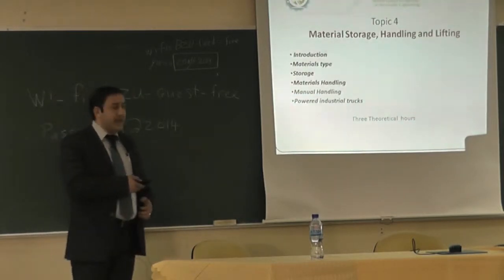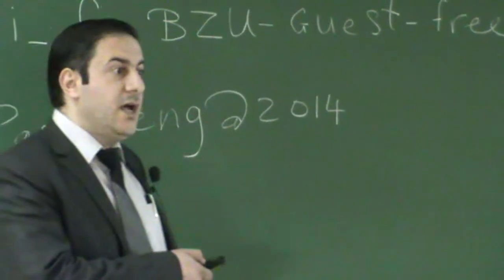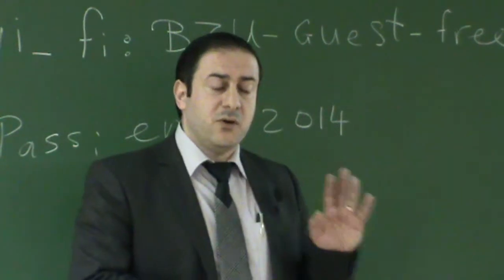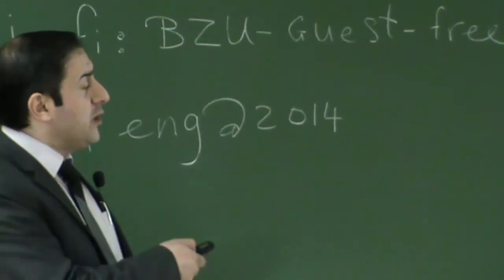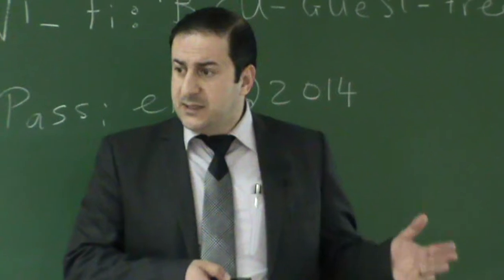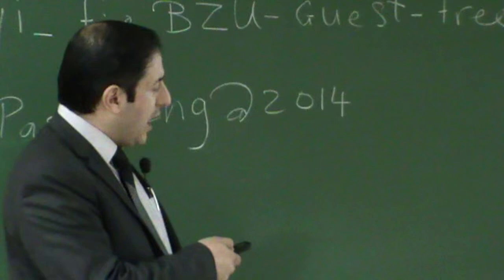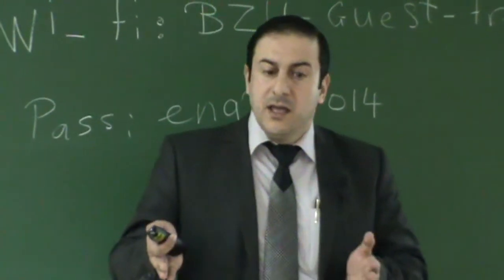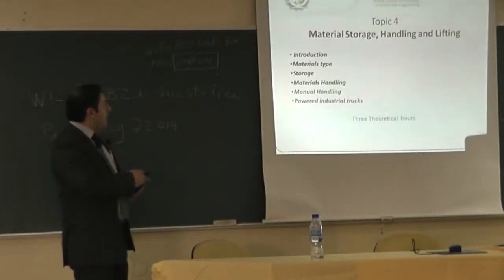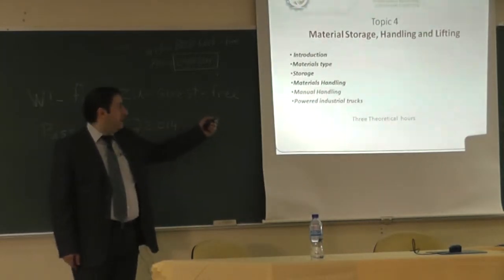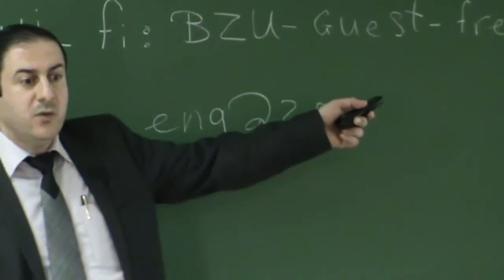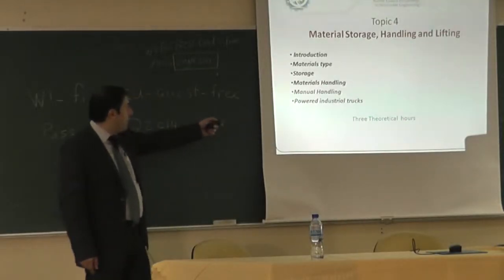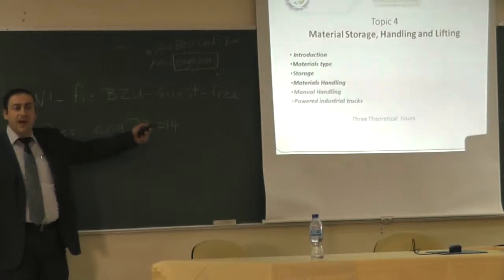Topic four is material storage, handling, and lifting — very important as it is one of the causes of injuries in the workplace. We will provide an introduction with statistics about workplace accidents. We will discuss material types and classification, the three types of materials and where to find them, then cover storage — how to store different materials and different packages such as barrels, bricks, and bales. We will discuss material handling, including manual handling and powered industrial trucks — specifically how workers should behave when manually handling any object or box. We will also talk about different trucks, mainly forklifts. This topic is three theoretical hours.